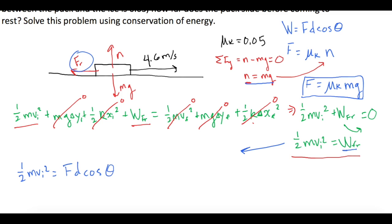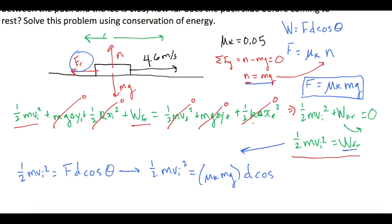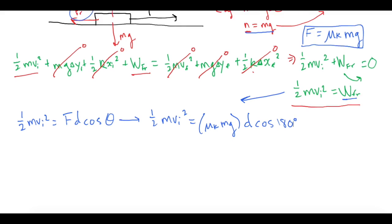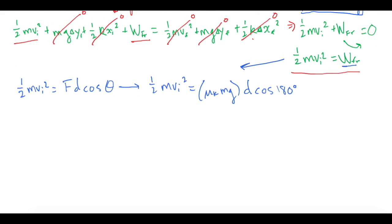Substituting back, our equation becomes: ½mv_initial² = μk · mg · d · cos(θ). The puck travels in one direction and friction acts in the exact opposite direction, so the angle is 180 degrees. Therefore: ½mv_initial² = μk · mg · d · cos(180°).